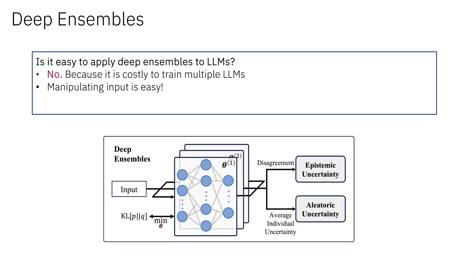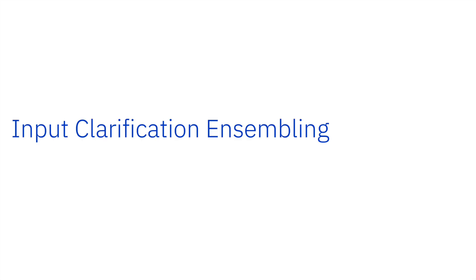On the other hand, one comparative advantage of LLMs is that it is relatively easy to manipulate the input text. Therefore, can we utilize this advantage and design a similar approach to deep ensembles? Motivated by this, we propose input clarification ensembling, an uncertainty decomposition method for LLMs that shares an interesting symmetry with deep ensembles.